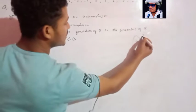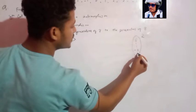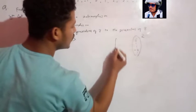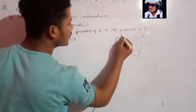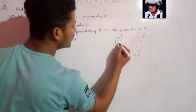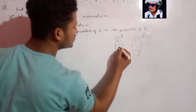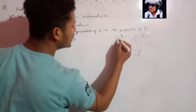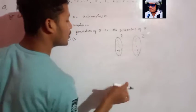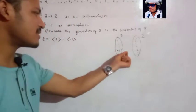So what are the generators of Z? We know that Z has two generators: 1 and minus 1. That means Z is generated by 1 and also by minus 1. So Z is the group generated by 1 and minus 1, meaning Z has two generators.